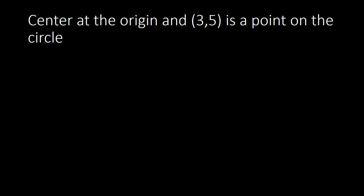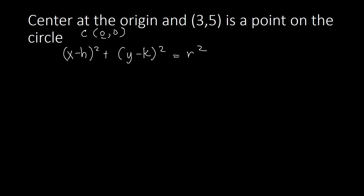The standard equation of a circle has the format: (x minus h) squared plus (y minus k) squared equals r squared. Our center is (h, k). Since the center is at the origin, h equals 0 and k equals 0. Substituting, we get (x minus 0) squared plus (y minus 0) squared equals r squared.